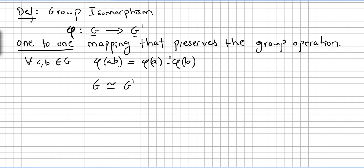If there is an isomorphism from G to G-prime, we write it this way: G isomorphic to G-prime. There are many ways to denote the isomorphism, but this is my favorite one.